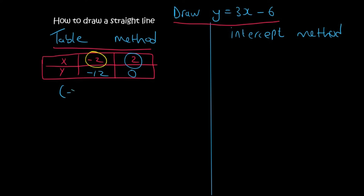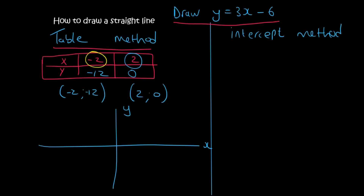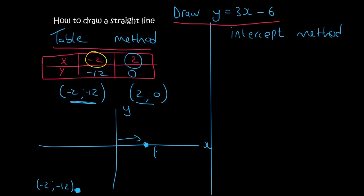We fill in y equals minus 12. Then we do the same with x equals 2: y equals to 3 times 2 minus 6, giving us 6 minus 6, which is 0. So now we have 2 points: the point minus 2 that goes with minus 12, and the point 2 that goes with 0. On a rough sketch graph, minus 2 would be to the left and minus 12 somewhere down here, and then at point 2 and 0, x is 2 and y is 0, so it's a dot on the x-axis. We can then draw our line through those points.